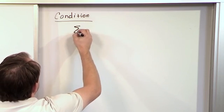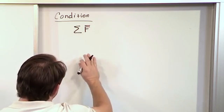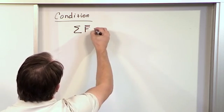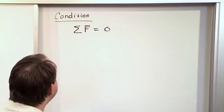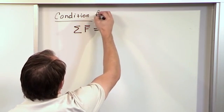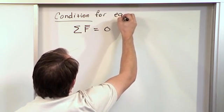In other words, we look at the sum of the vector forces acting on the particle or the center of mass of the object, and the sum of those forces have to be zero in order for equilibrium to be reached. So for equilibrium, this is exactly what we wrote before.